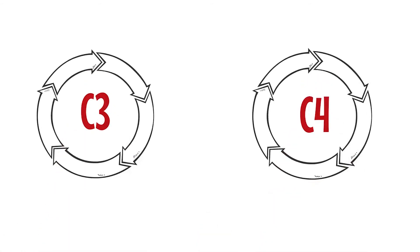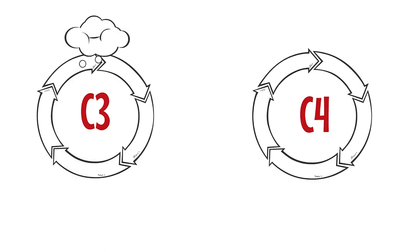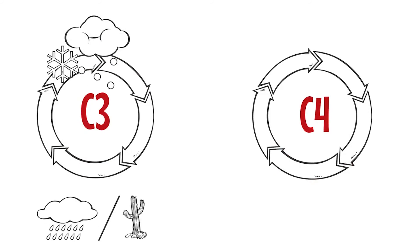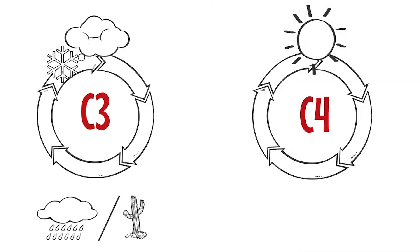These differences are important because the two pathways are also associated with different growth requirements. C3 plants are adapted to cooler season establishment and grow in either wet or dry environments, while C4 plants are more adapted to warm or hot seasonal conditions under moist or dry environments.